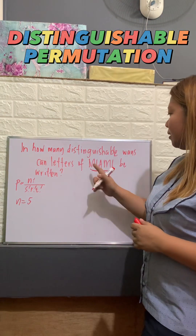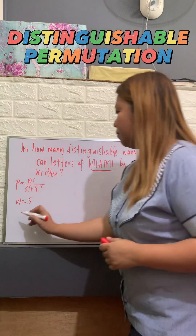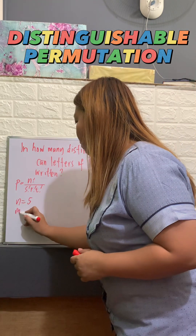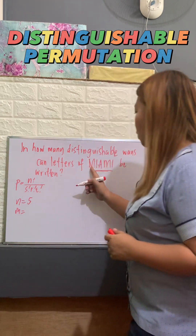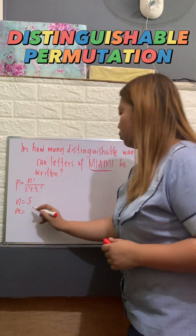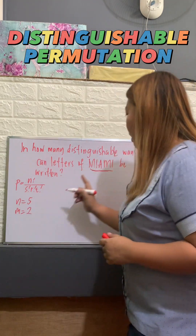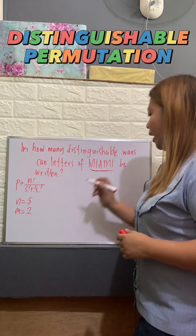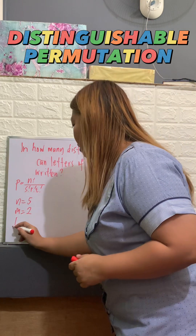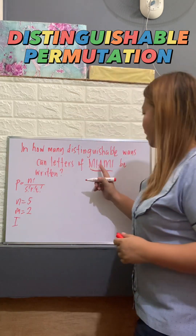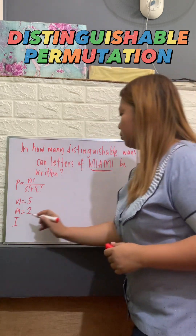What are the repeated letters? Letter M — how many times? 1, 2. So, 2. And letter I — how many times? 1, 2.